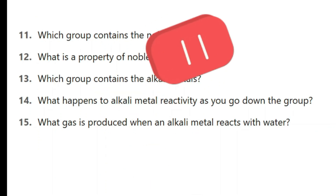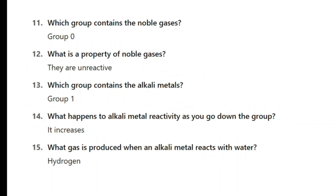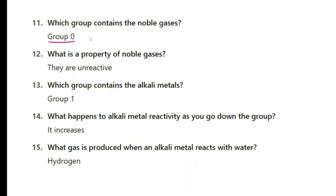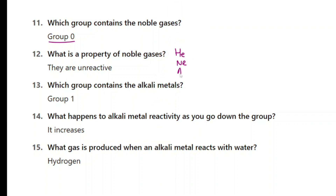Here are the next five questions. Please pause the video and do these. Here you can see the answers. Which group contains the noble gases? Noble gases are group 0 or group 8. What is a property of noble gases? They are very unreactive. Helium, neon, argon — all of these. Helium has two electrons in the last shell and the others have eight electrons in the last shell, so they are already complete and very unreactive.